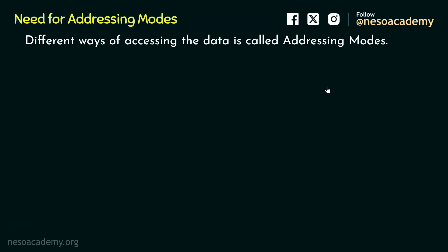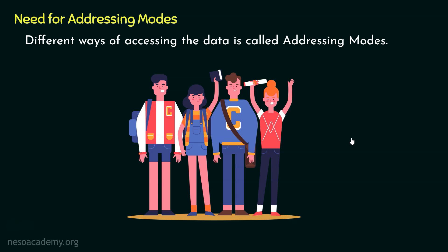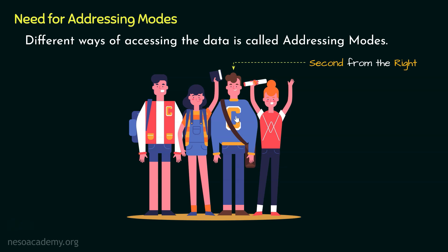Let me give you an illustration to understand the same. From a group of people, if we want to specify a particular person, how many ways can we do that? Now if we know the name of the person, we can specify him. Now if we don't know the name, we can also specify that person by telling about the position of that person within the group. Now in a group of people, the positions when they are together might get altered.